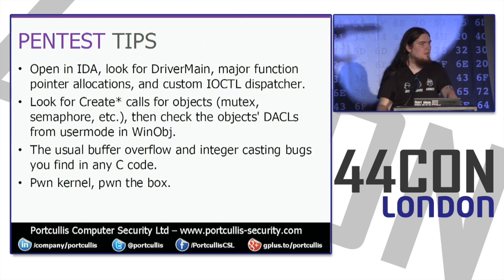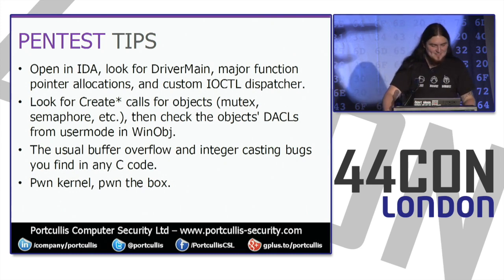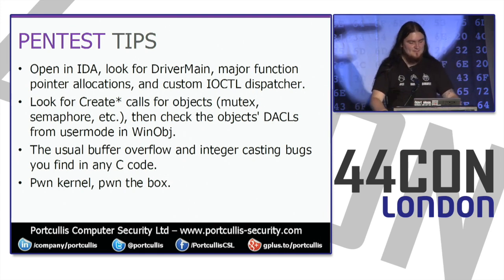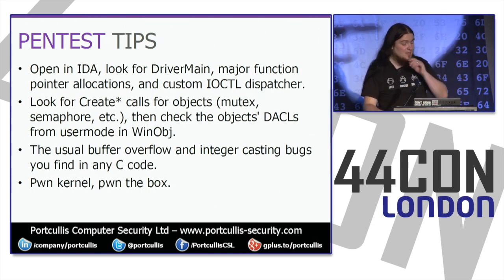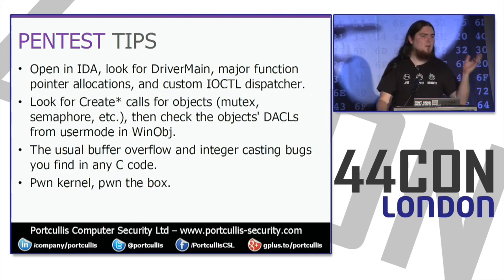Also look for things like create calls — create mutex, create semaphore, create event — and check the access control list from user mode in WinObj. As I explained before, if they don't explicitly set a DACL, the default is null — everybody can do anything they like to it — which if it's sensitive, like writing arbitrary bits of memory into kernel space or untrusted data into kernel space, you don't want that accessible from a low-privileged account. Having the DACL set can be important, and the Symantec Endpoint bug was an example of this. Fuzz everything. If you pwn the kernel, you pwn the box.